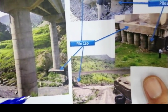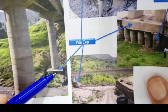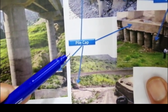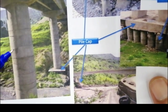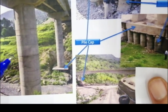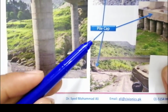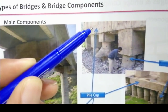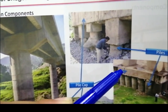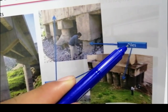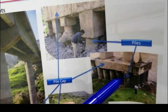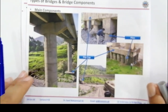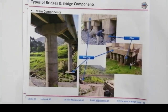You can see the pile below this plate — this is called the pile cap for this bridge. This is also a pile cap, as you can see in the given picture. And these are piles — this is a pile, and this is a pile. Now, what is an abutment and what is a pier?